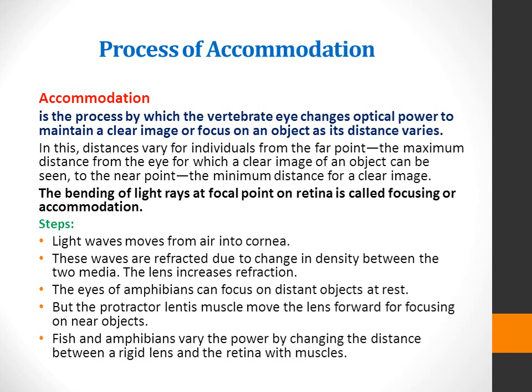Light waves move from air into the cornea and are refracted due to the change in density between the two media. The lens increases refraction. The eyes of amphibians can focus on distant objects at rest, but the protractor lentis muscle moves the lens forward for focusing on near objects. Fish and amphibians vary the optical power by changing the distance between the rigid lens and the retina using muscles.